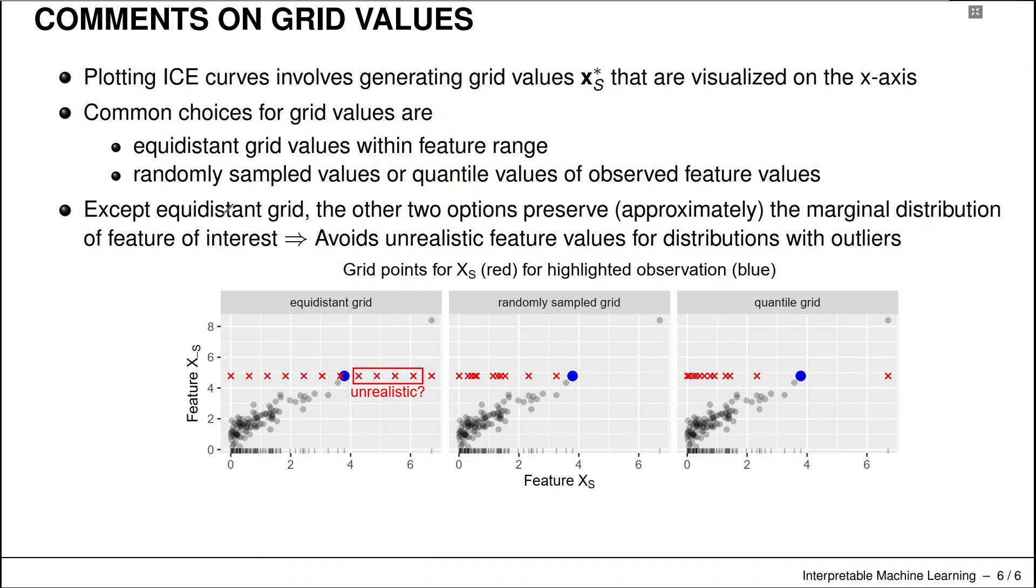So we compute something like the minimum value of x₁ and the maximum value of x₁, and then just produce an equidistant grid between these min and max values.